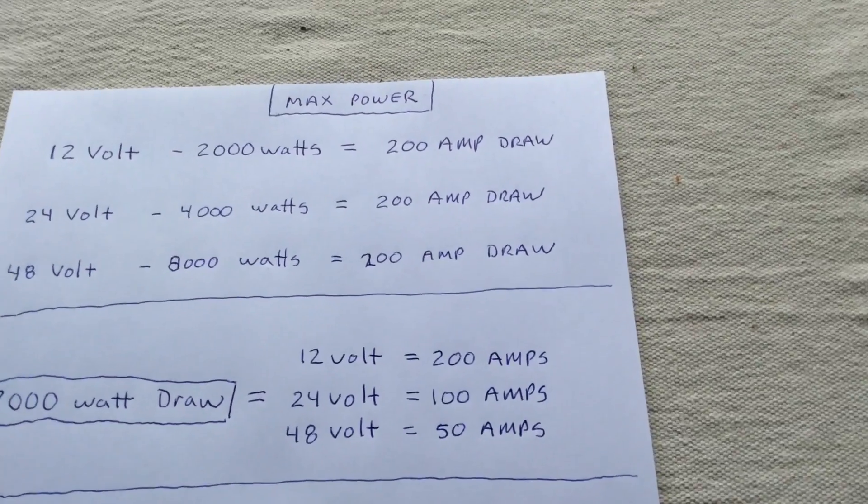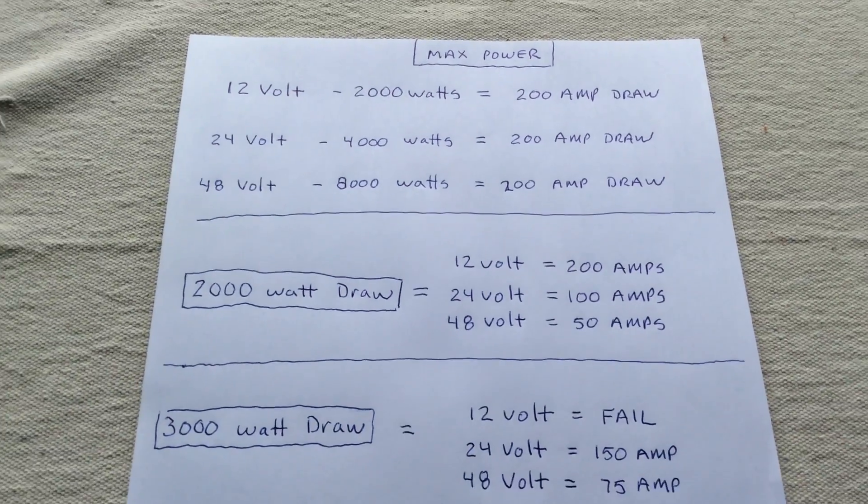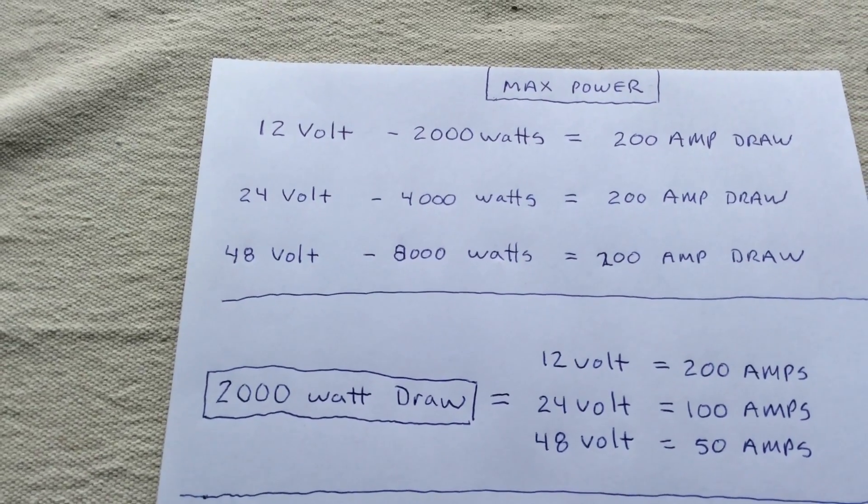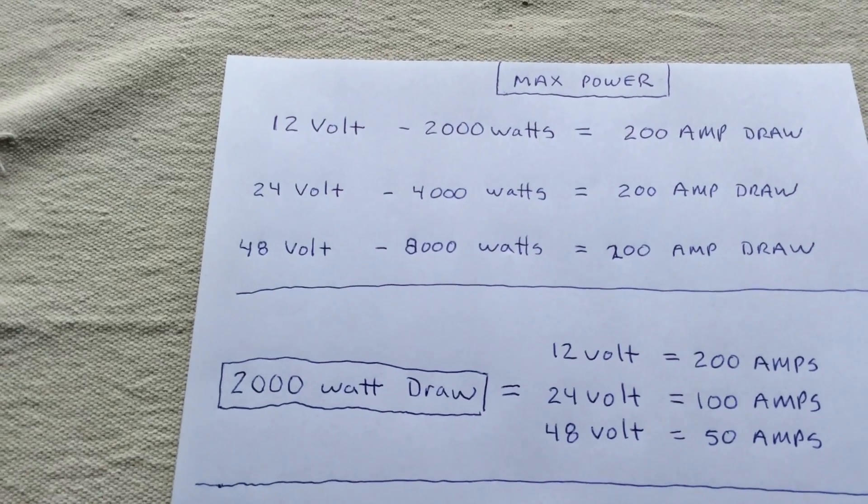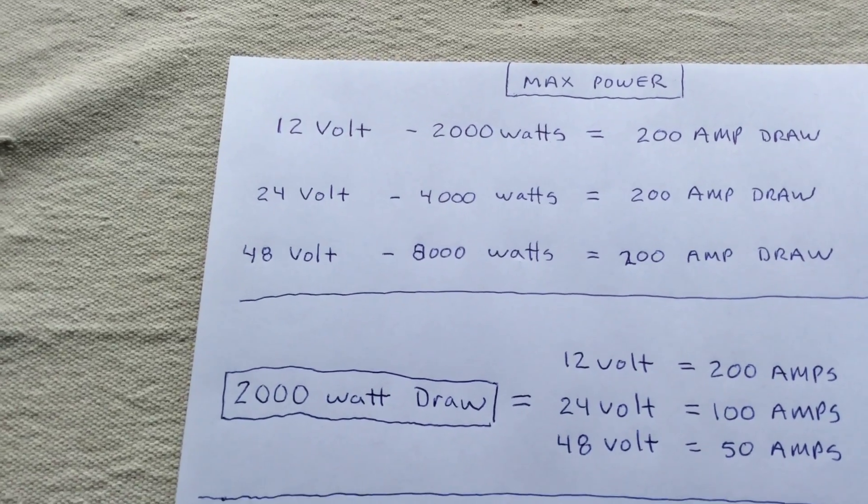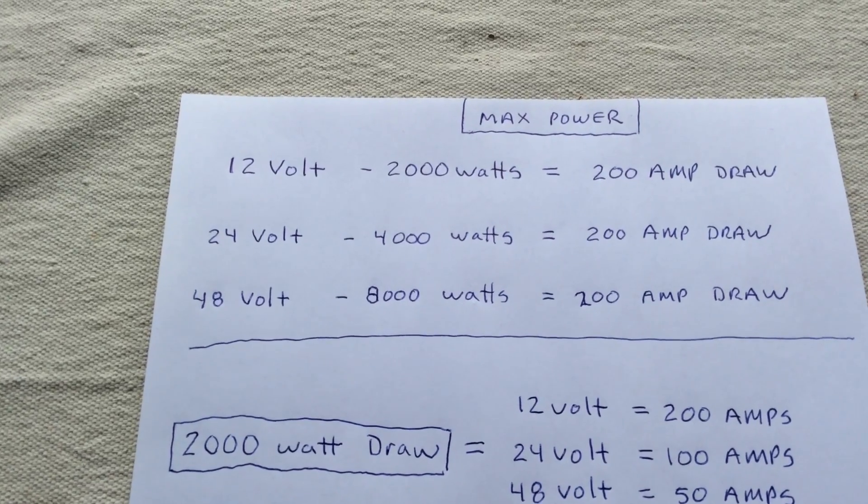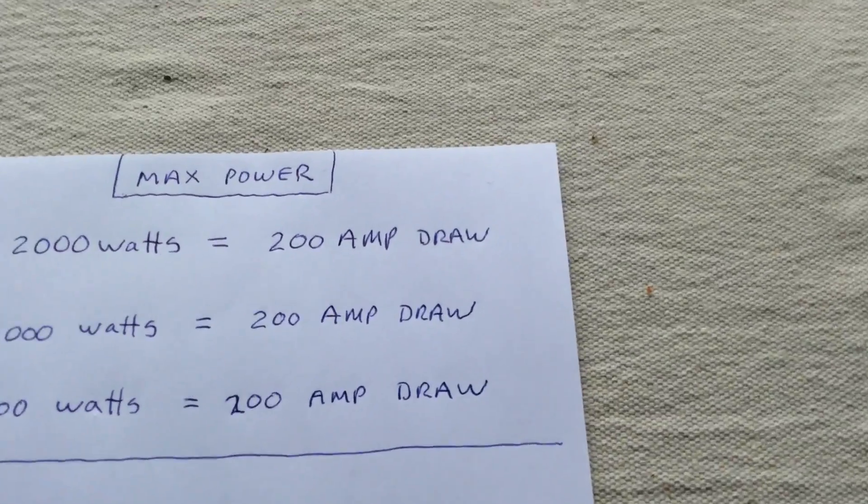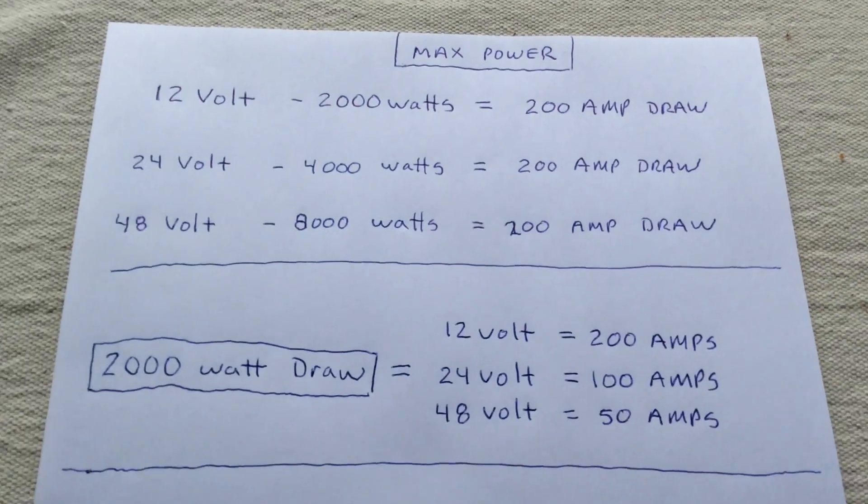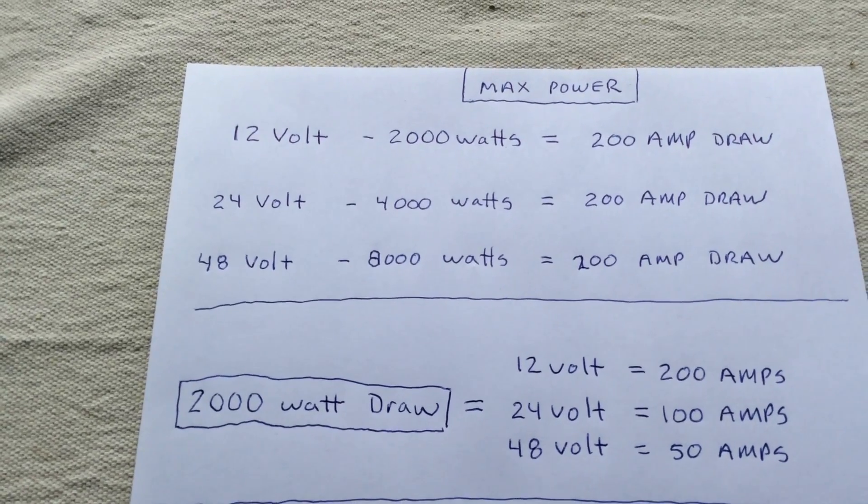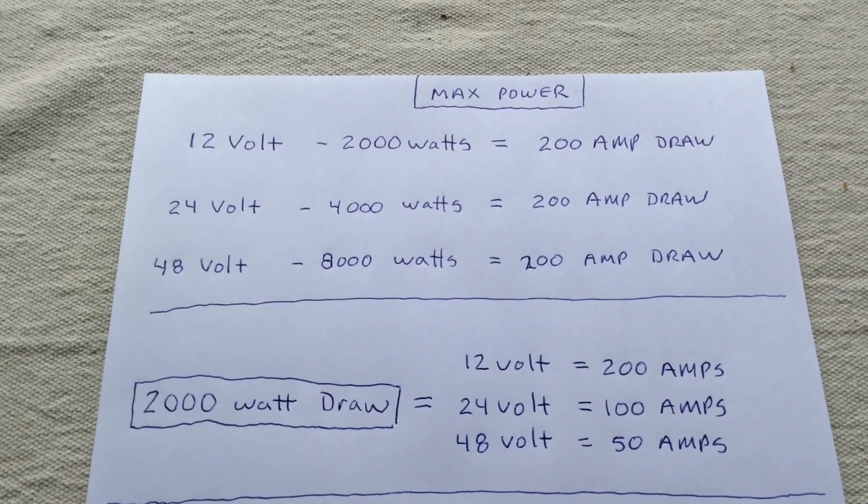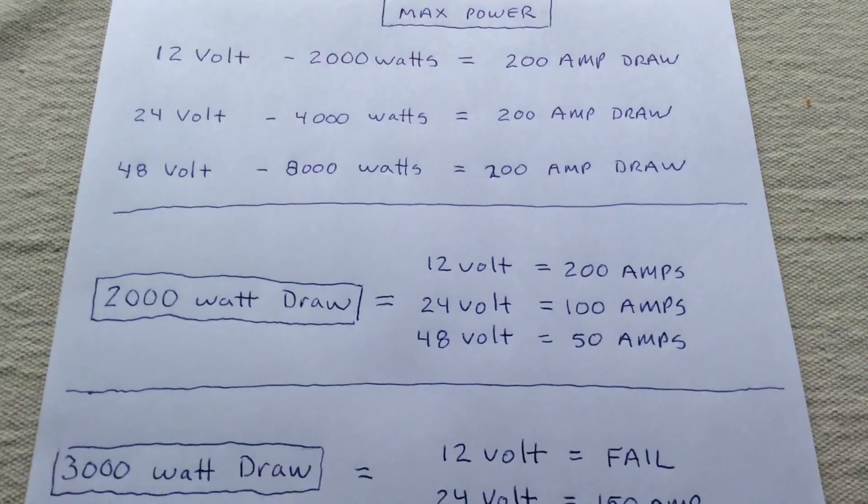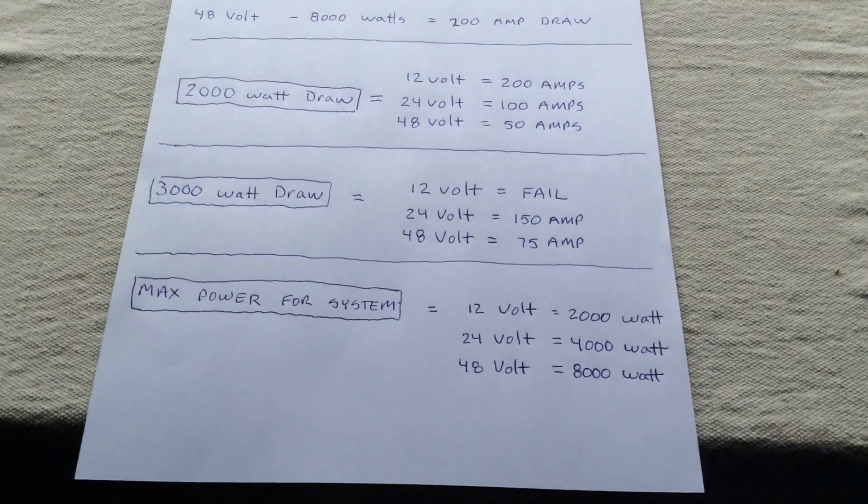And the only reason is these amp draws, not the efficiency. It's not that 48 because efficiency between these three, a 48 volt efficiency is going to come in at about 94% efficient, 24 volt 93% efficient, a 12 volt 90, 91% efficient. So the efficiency is not drastic. What you got to look at is over here, the amp draw. It's the amp draw that you're worried about. Not that I'm only got 2% efficiency difference. It's minimal. The efficiency that people don't tell you about is the amp draw. That's where your efficiency comes in.